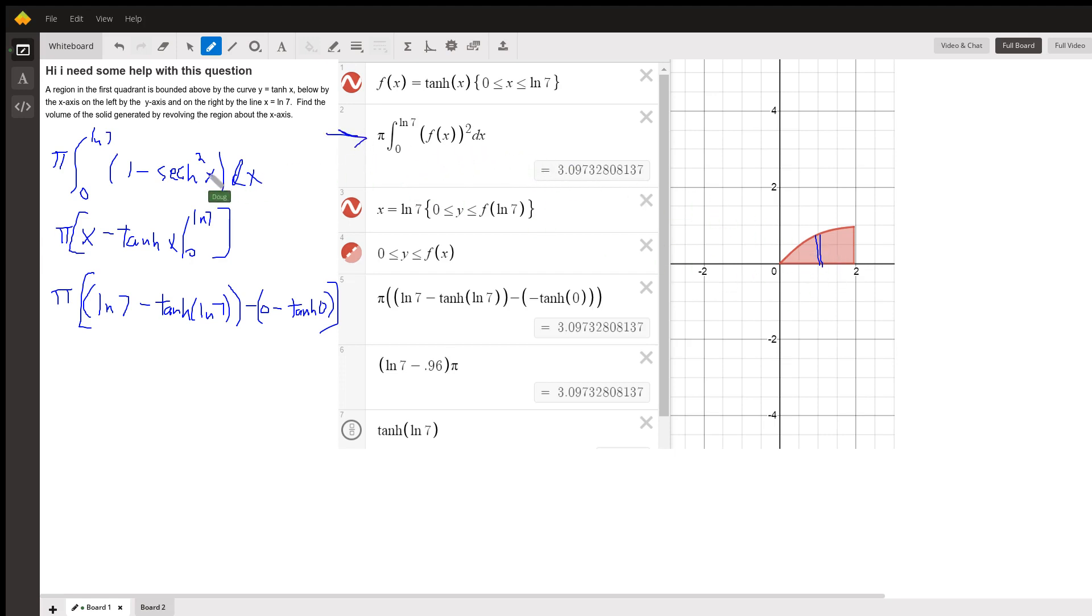So that would be pi times the definite integral from 0 to ln of 7, hyperbolic tangent of x quantity squared. But the hyperbolic tangent of x squared can be written as 1 minus hyperbolic secant of x squared. And now we can integrate term by term.